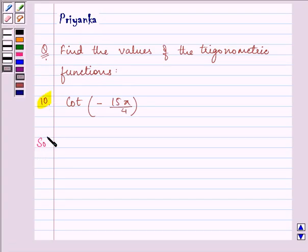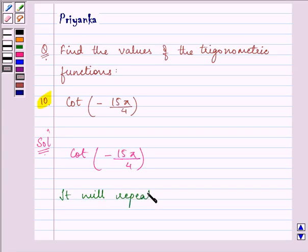So let us start. Now here we are given cot. Cot is a reciprocal of tan x, right? So it will repeat itself after an interval of pi, as it is done with tan also.